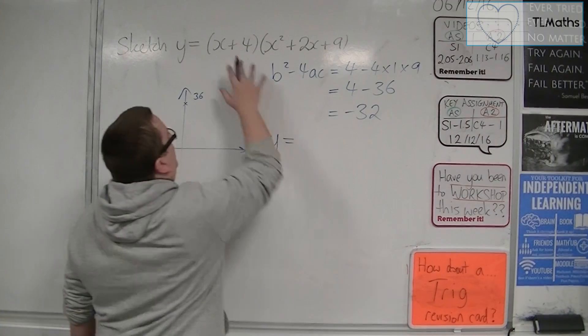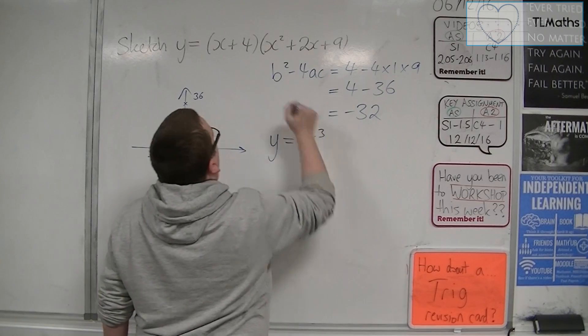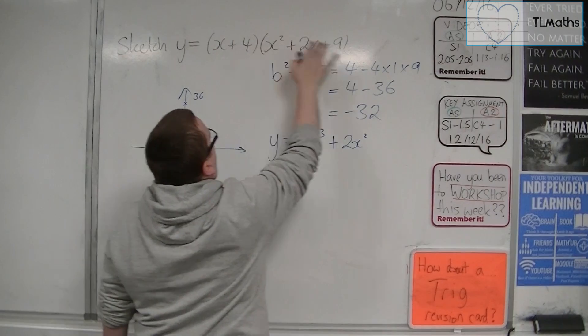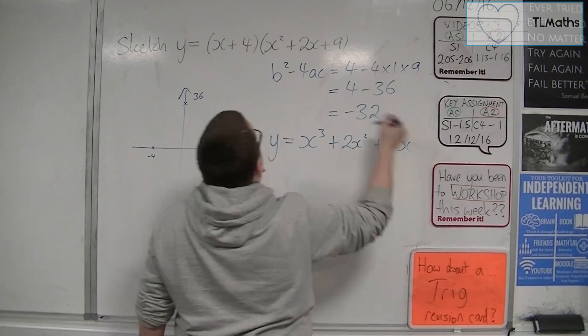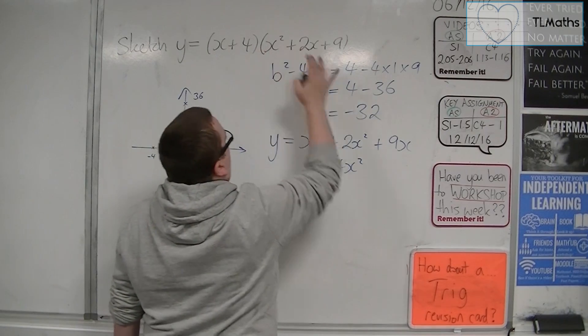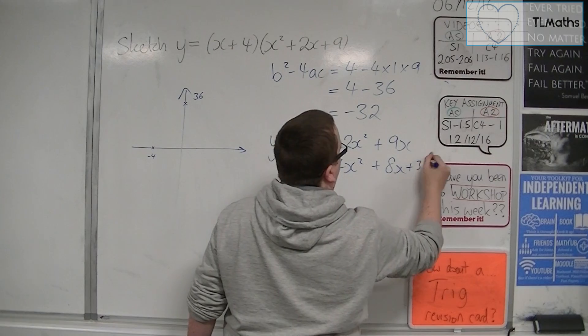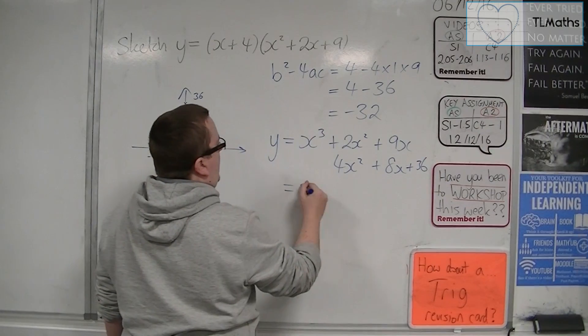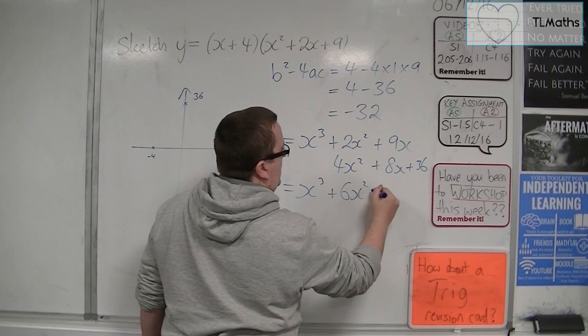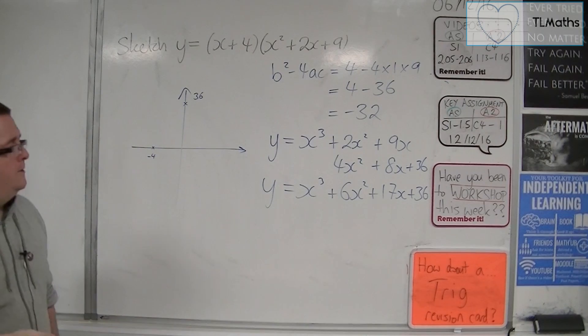So we're going to expand those brackets out. We're going to get an x cubed. We're going to get x times 2x, so 2x squared. We're going to get x times 9. We're going to get 4 times x squared, 4 times 2x, and 4 times 9. So we get y is equal to x cubed plus 6x squared plus 17x plus 36.